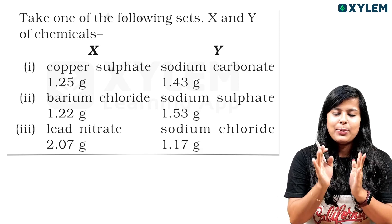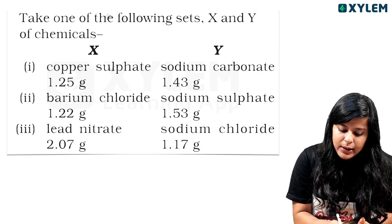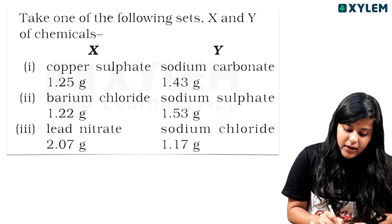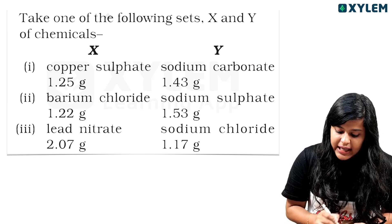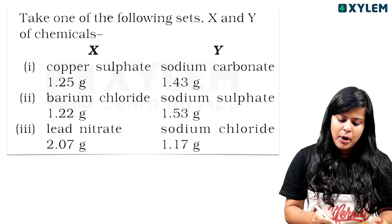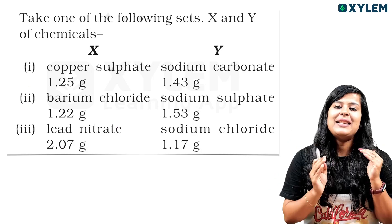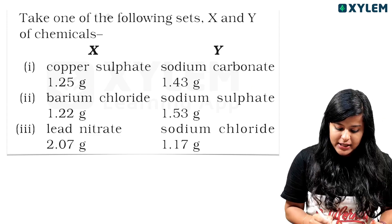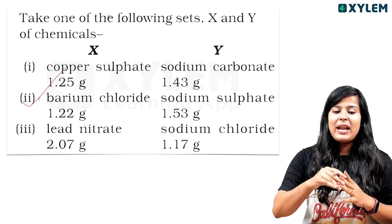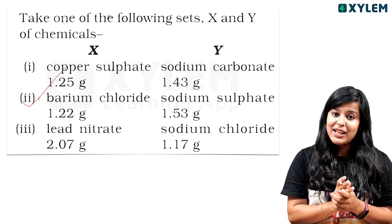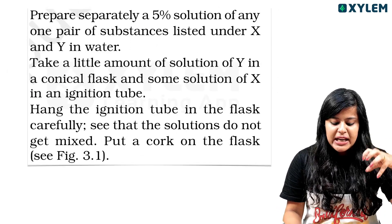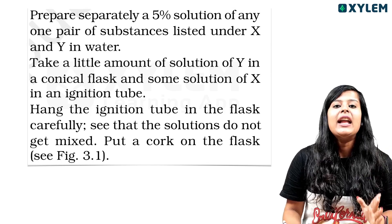We have a given activity. Take one of the following sets, X and Y, of chemicals. Set one: copper sulfate and sodium carbonate. Set two: barium chloride and sodium sulfate. Prepare separately a 5 percent solution of any one pair of substances X and Y in water.